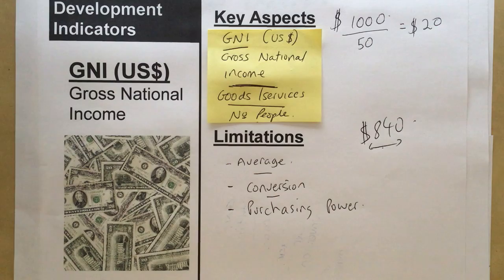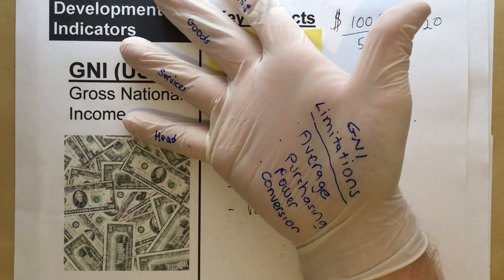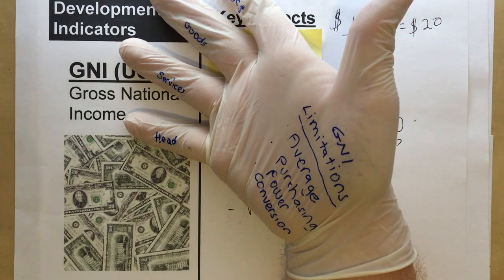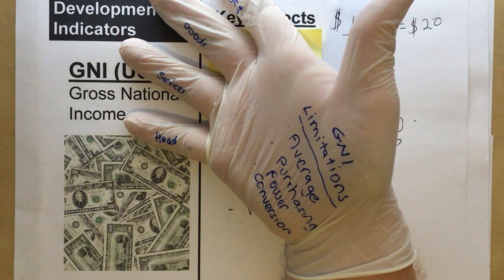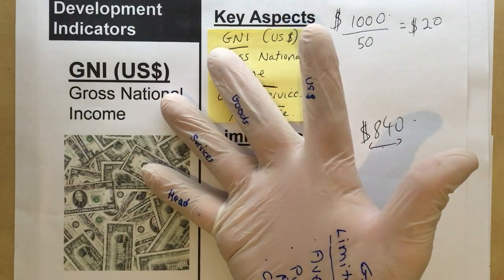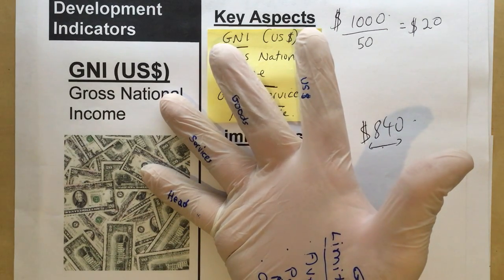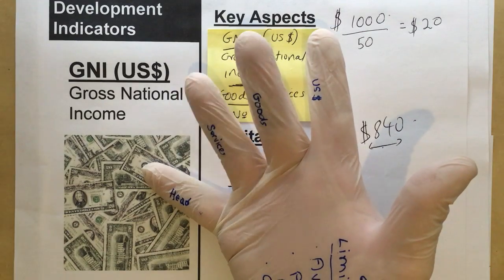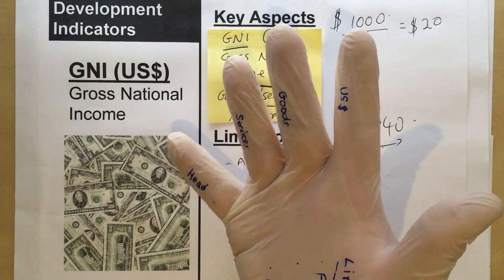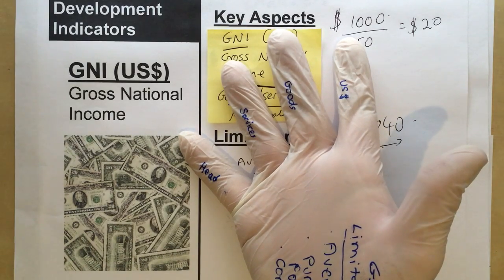In summary: GNI is measured in US dollars and all currencies are converted into that, making it easily comparable between countries. It's a measure of goods and services divided by the number of people, giving a GNI per capita. The limitations are: it's an average, purchasing power varies between countries, and the conversion rate can fluctuate day to day. Thank you for watching — that was development indicators: GNI, key aspects and limitations.